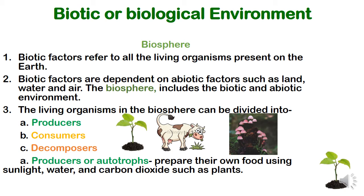You are now clear about atmosphere, lithosphere, hydrosphere, and biosphere. The living organisms in the biosphere can be divided into three parts. First is producers — like plants. Second is consumers — like cows. Third is decomposers — like fungus.